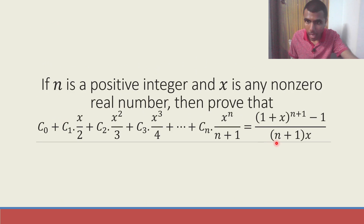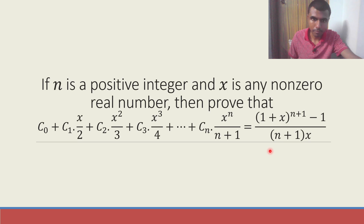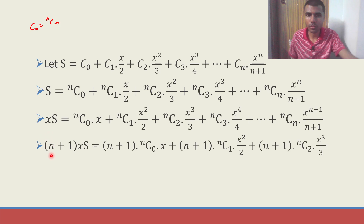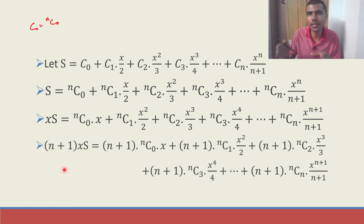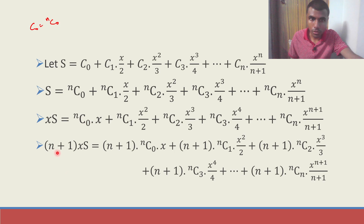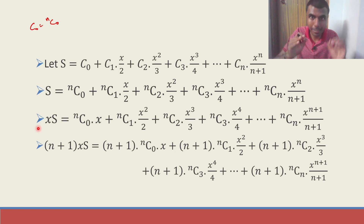Now in the LHS I have (n+1), so I am going to multiply both sides with (n+1). I am telling you the logic: in the RHS denominator it is there, that is why we are doing this. So each term gets multiplied by (n+1): (n+1)xS equals (n+1) into nC0 into x, plus (n+1) into nC1 into x square by 2, and so on.